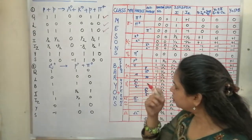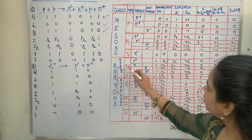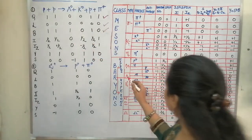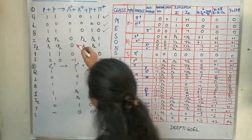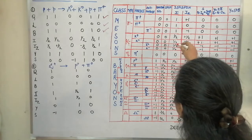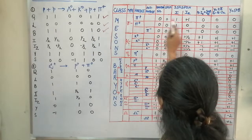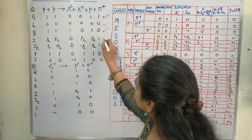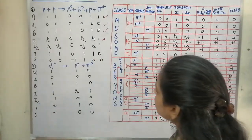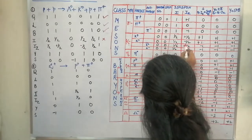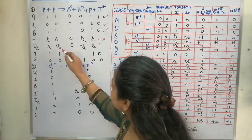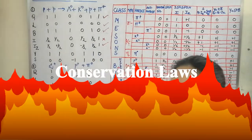For total isospin I: each proton has I = 1/2, so the left side gives values of 1/2 and 1/2. Lambda naught has I = 0, K naught has I = 1/2, proton has I = 1/2, and pi positive has I = 1. The total isospin I is not conserved. For the z-component Iz: proton has Iz = +1/2, and K naught has Iz = −1/2, while pi positive has Iz = +1. The left side sums to +1 and the right side also sums to +1 — so Iz is conserved.